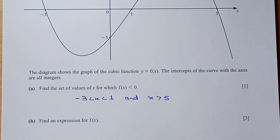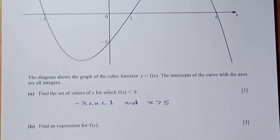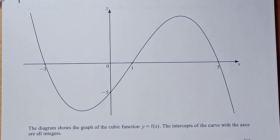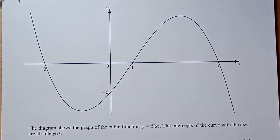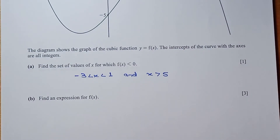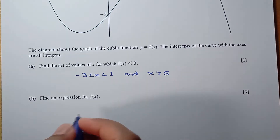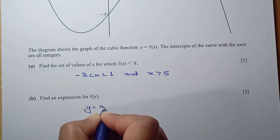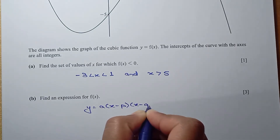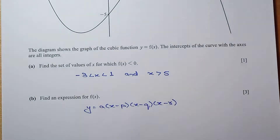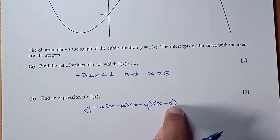Now for part b, find an expression for f of x. We need to find the equation of the cubic function using the given graph. It is a cubic function — we have the x-intercepts and the y-intercept given. So first we write down the factored form: y equals a times (x minus p)(x minus q)(x minus r), where p, q, r are the zeros or x-intercepts. The x-intercepts are minus 3, 1, and 5.